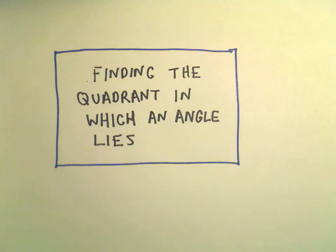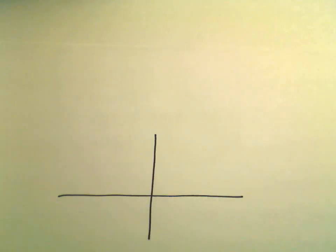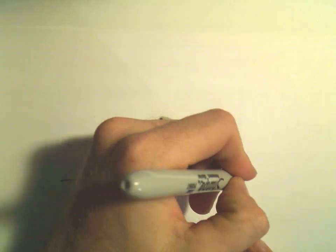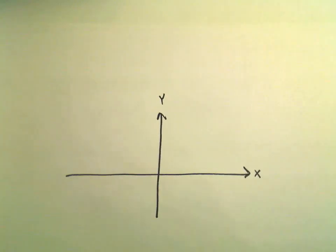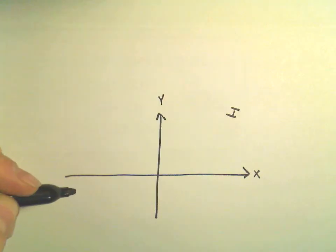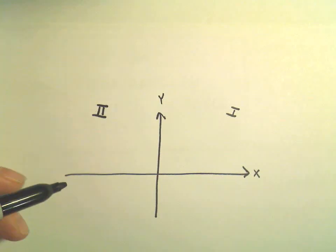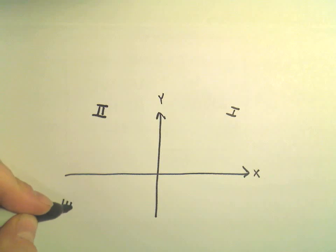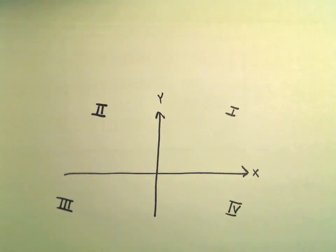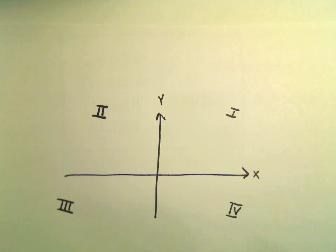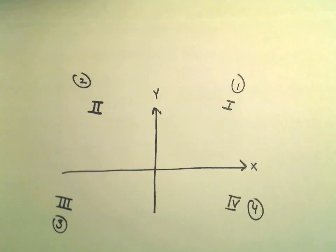In this video I just want to do a few basic questions related to finding the quadrant in which an angle will lie. So here's our x-axis and y-axis. The top right quadrant where x is positive and y is also positive is quadrant one. The top left is quadrant two, the bottom left is quadrant three, and the bottom right is quadrant four. People always use Roman numerals for these — makes you look smart.